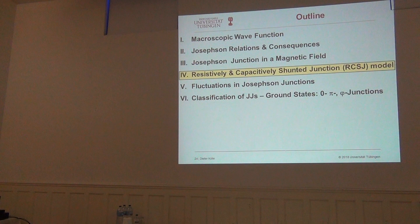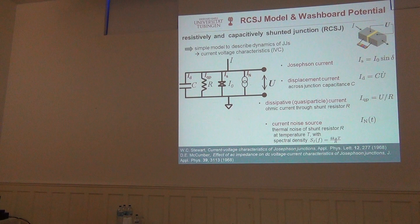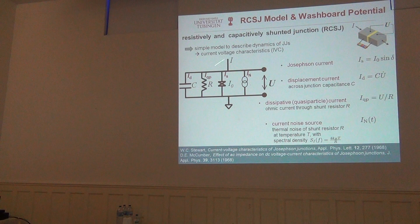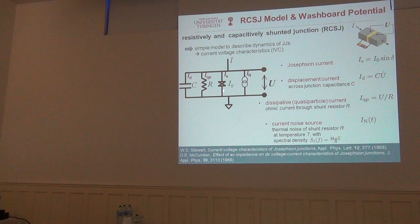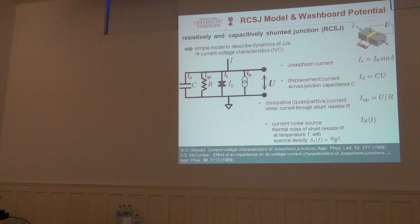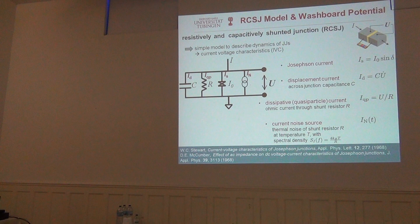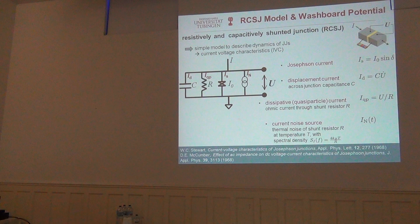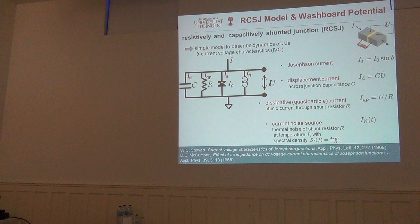Now I come to the resistively and capacitively shunted junction (RCSJ) model, a very simple model to describe the dynamics of the phase difference across the junction. The model is depicted as an equivalent circuit where the injected current flows through different current paths: the Cooper pair tunneling current I_S, a quasi-particle tunneling current I_QP approximated as an ohmic current described by resistance R, and for time-varying components, a displacement current I_D flowing across the capacitance C.